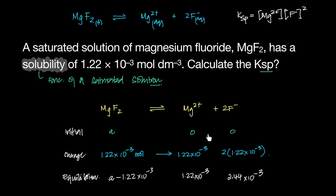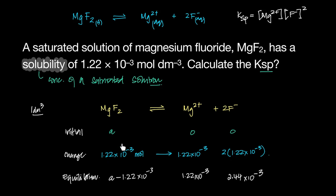We had initial moles we did not know, and none of the ions existed initially. This much dissolved because that's what has been told to us in one dm³. Since it's concentration, it works for everything. In one dm³ this many moles dissolve, in the ratio of the equation: 1 is to 1 is to 2. Started with A, this reacted away — it decreased — so A minus that is what's left.